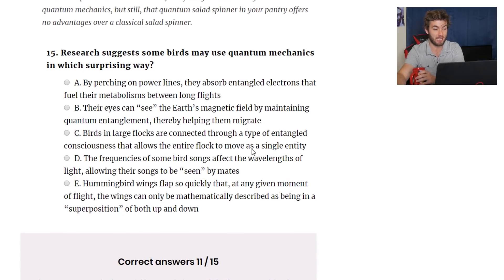Research suggests some birds may use quantum mechanics in which surprising way? By perching, well, hold on. Birds use the magnetic thing, right? That's a thing? Something about Earth's magnetic field I think is how birds know what direction to go when they migrate. What is it? I don't know. Maybe they surf the magnetic field? I have no idea. By perching on power lines, they observe entangled electrons that fuel their metabolism between long flights. Who thinks of things like that? Their eyes can see the Earth's magnetic field by maintaining quantum entanglement, thereby helping them migrate. That sounds like what I was saying, but you threw in quantum entanglement in there. Now I'm doubting it.